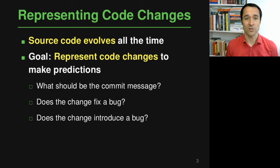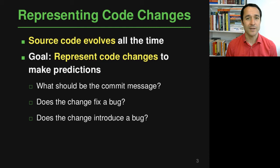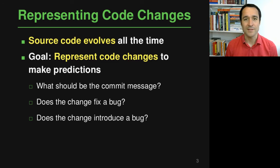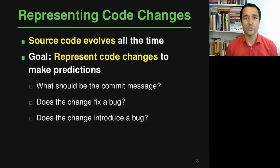Let's start with a bit of motivation. Why do we actually want to reason about code changes and why do we want to represent code changes using a neural model? The reason why code changes are important is because source code of successful projects is evolving all the time. You're adding more features, fixing bugs, supporting new environments, and so on. If you can reason about these code changes and represent them using a neural model, we can use this to make a number of useful predictions, which we will talk about toward the end of this part of the course.